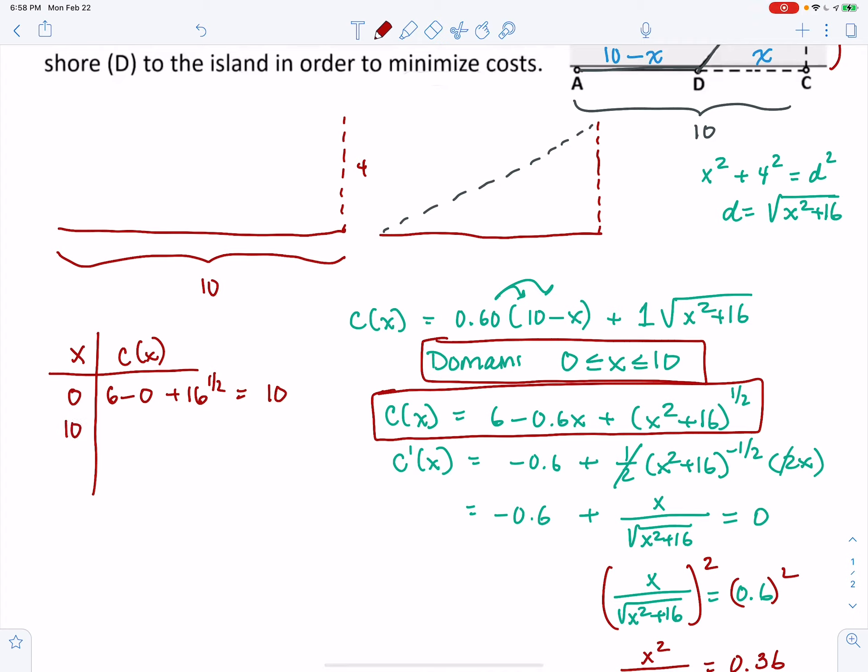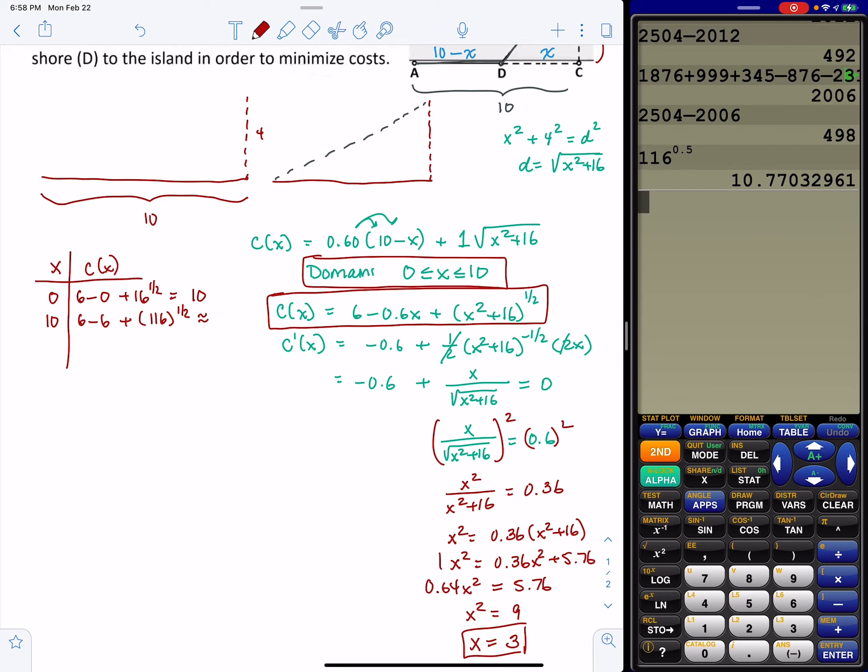If X equals 10, we have 6 minus, now 0.6 times 10 is 6. So that means that those two are going to cancel each other out. But then we have plus. Now under the 1 half power, we have 10 squared, which is 100, plus 16. That's 116 to the 1 half, which is, if I'm recalling correctly, I have this computed out already. It's 10.77. So definitely not a contender for a minimum because 10 is already lower.